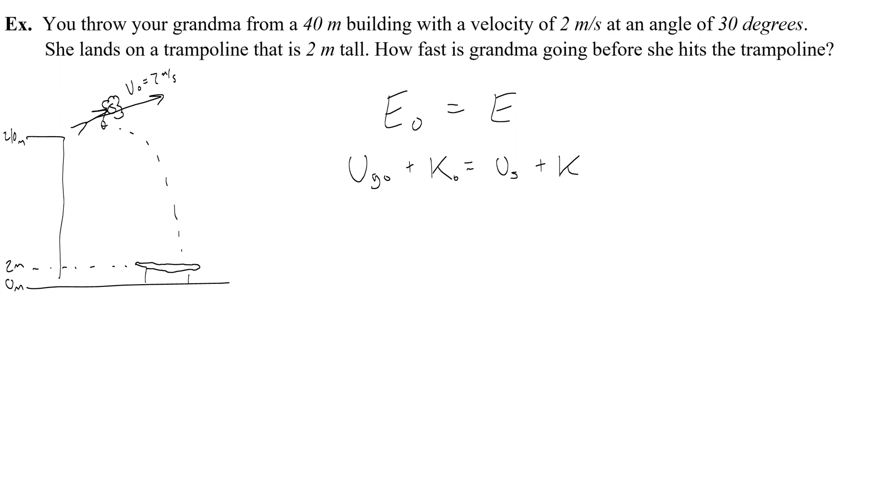Rather than choosing that the ground is zero, I'm going to make a slight adjustment. I'm going to say that the top of the trampoline is zero. That would make the ground negative 2 if for some reason I needed it, and then the initial height, instead of 40, I would make it 38. If I do that, then I can say that at the trampoline there's no gravitational potential energy, and I can just set those two energies equal to the final energy at the end.